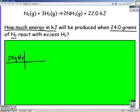So just like all our stoichiometry problems convert what they give you to moles. So 28 grams of nitrogen equal one mole. Now that we have moles we're going to look at our balanced equation. We have one mole of nitrogen for every 22 kilojoules.